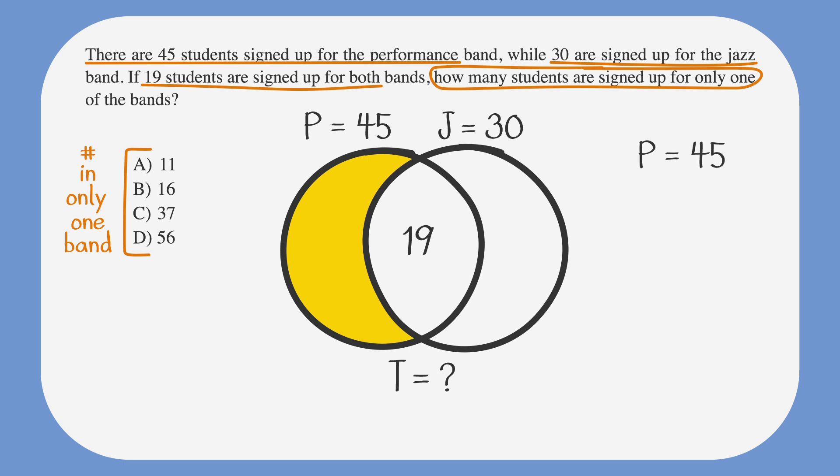Well, if there are 45 performance band members and 19 of those are also in the jazz band, then to find the number of students who are only in performance band, we need to subtract 19 from 45, which gives us 26. So there are 26 students who are only in the performance band. Let's label that on our Venn diagram.